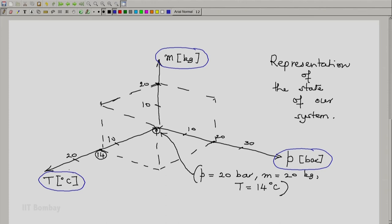So each coordinate represents a property. First thing we should realize is each property is represented by a coordinate. Then the geometric space will represent the thermodynamic space. And what is represented is the state of our system.